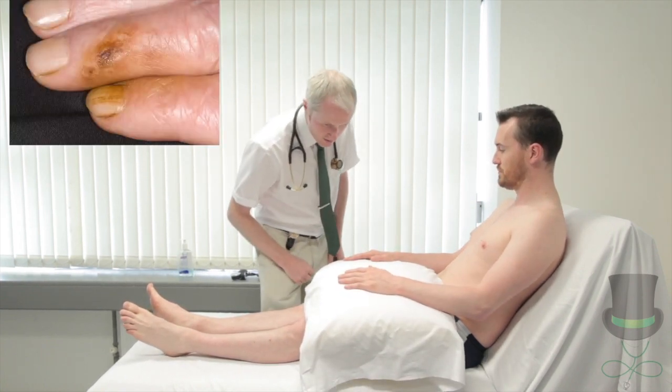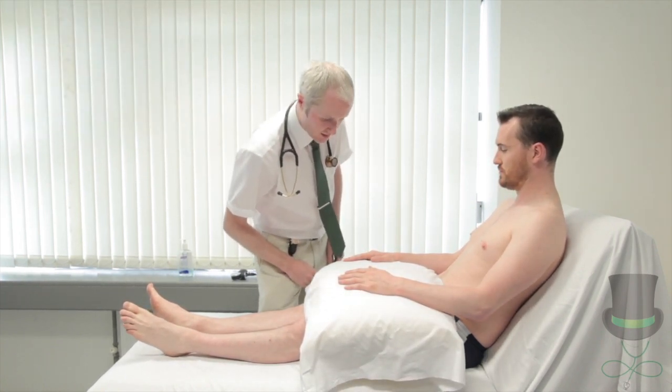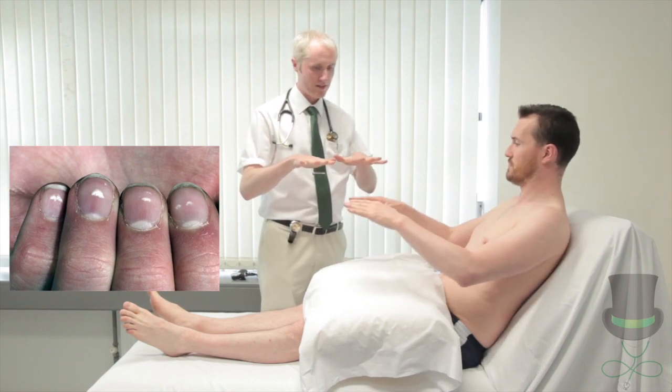Inspect the tips of the fingers for tar staining, which is seen in heavy smokers. Look for leuconychia or white nails, which can be seen in heart disease.